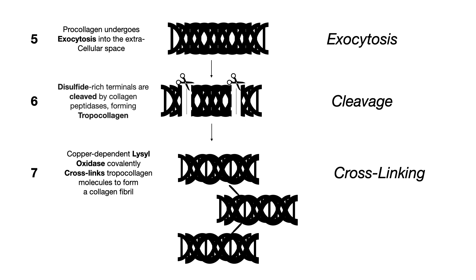Here are mnemonics for steps six and seven. For step six, instead of saying 'cleavage,' say 'sleavage' with two S's — those two S's remind you of disulfide, which is what's being cleaved. So 'sleavage' tells you it's cleavage of disulfide terminals, forming tropocollagen. For step seven, instead of 'crosslinking,' say 'crosslunking,' where LO stands for lysyl oxidase — reminding you that lysyl oxidase does the crosslinking of tropocollagens to form collagen fibrils.